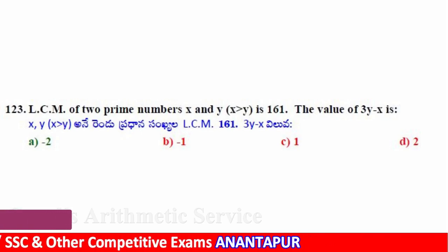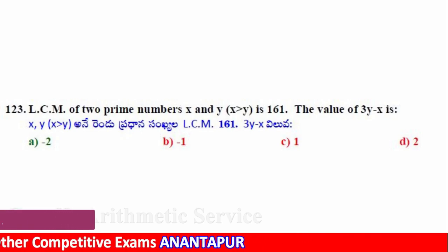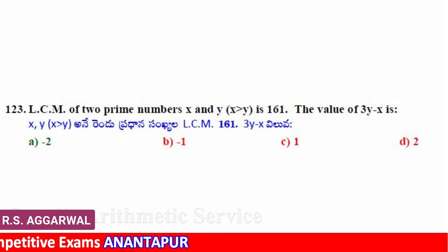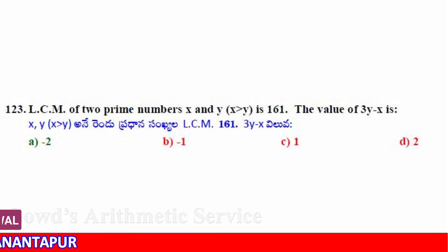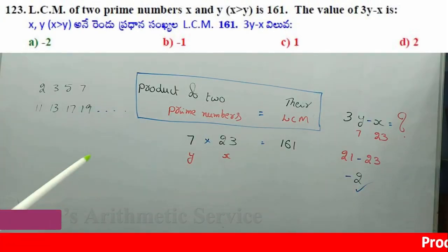We have two variables x and y, where x is greater than y. The second question involves the expression 3y minus x, again with x and y where x is greater than y.